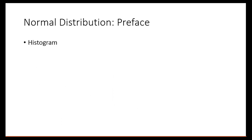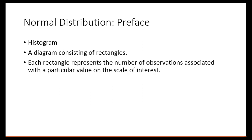I also assume that you know what a histogram is. Just to refresh your memory, a histogram is a diagram that consists of rectangles, and each rectangle represents the number of observations associated with a particular value on the scale of interest. There are two aspects of a histogram that are really important.